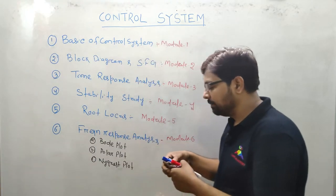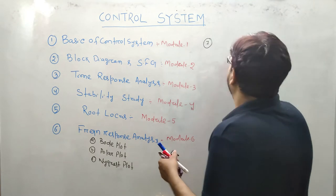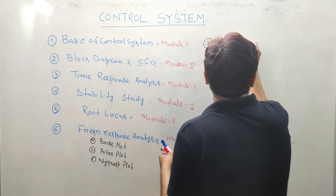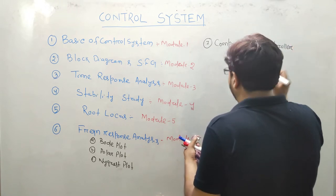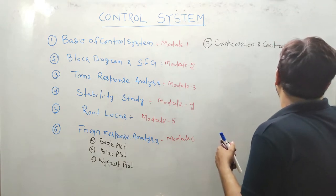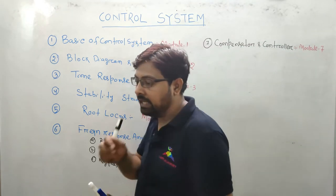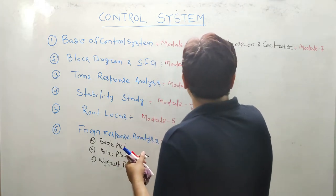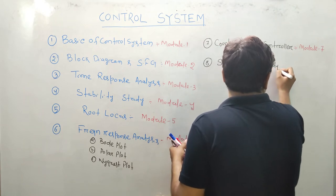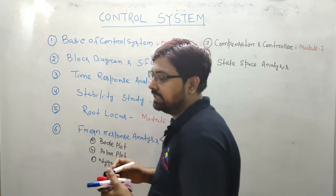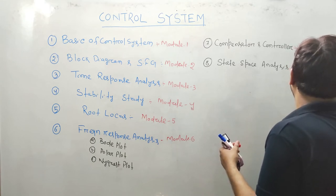उसके बाद आएगा number 7 - number 7 होगा मेरा Compensator and Controller. इसको हम खत्म करेंगे Module 7 में. उसके बाद आएगा मेरा State Space Analysis - number 8. State Space Analysis आएगा मेरा Module 8 में.